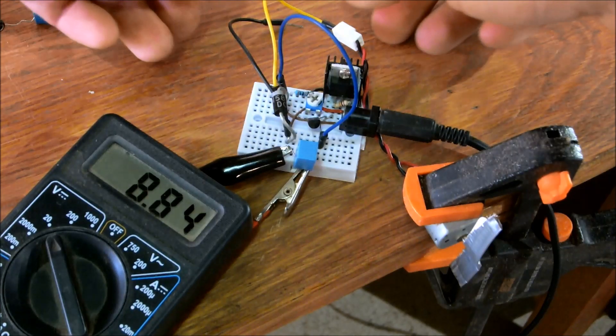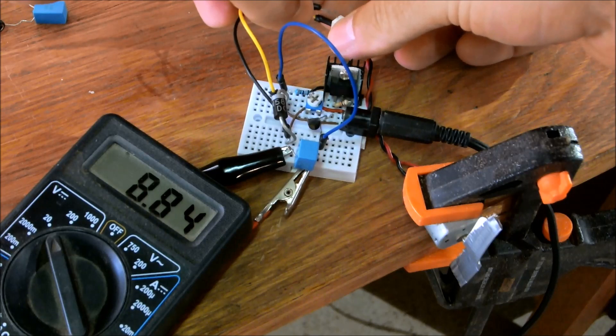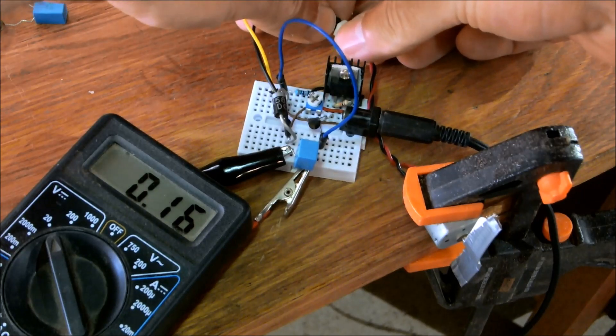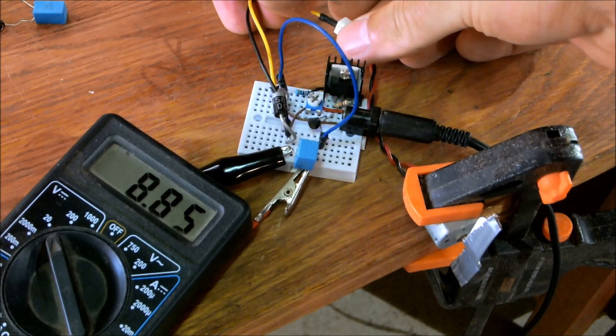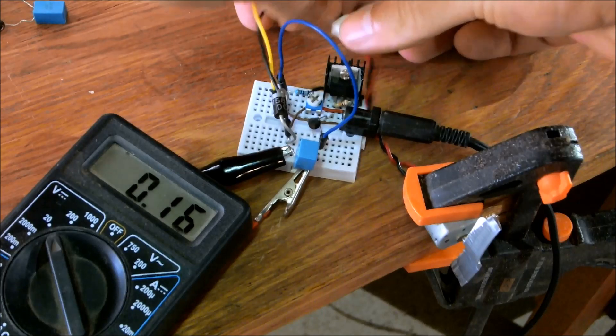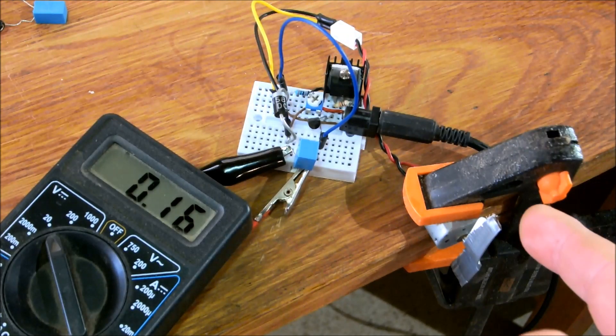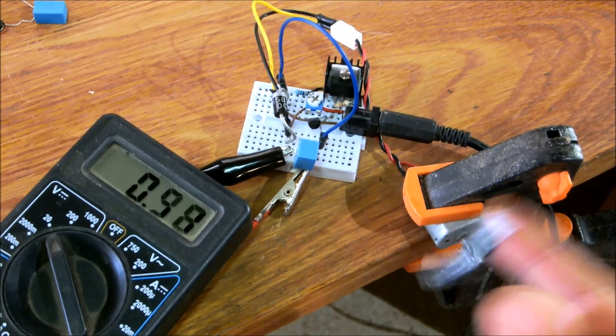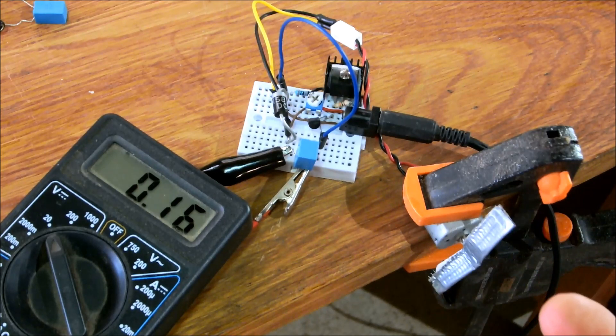Let me first show you what the panel does if I connect it directly to the motor. Notice the voltage drops from 8 volts down to 160 millivolts and nowhere near enough power to get the motor going.